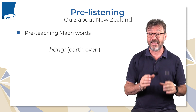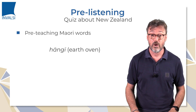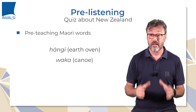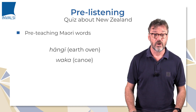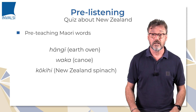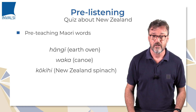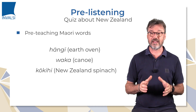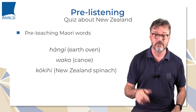These Maori words include: Hangi — earth oven; Waka — canoe; Kokihi — a New Zealand spinach. All the materials are available by clicking on the links below.